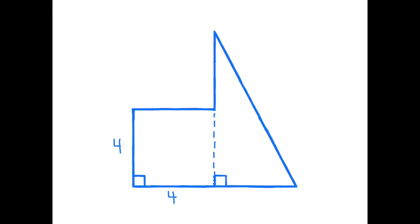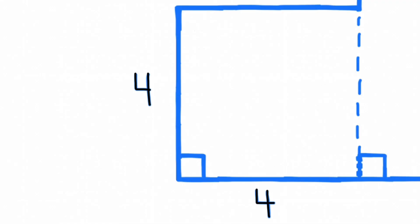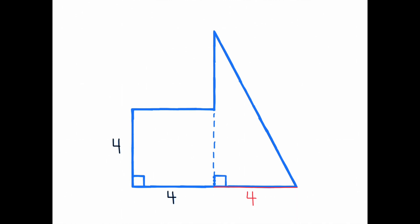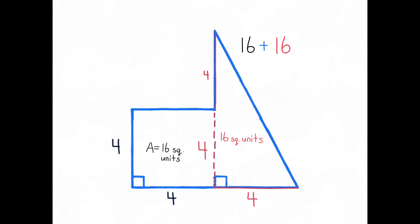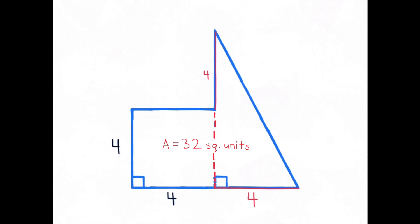I'm going to decompose this pentagon into a square and a triangle and figure out their areas. The square has side lengths of 4. The triangle has a base of 4 and a height of 8. The area of the square is 4 times 4 equals 16 square units. For the triangle, I multiply base times height: 4 times 8 is 32, then divide by 2 since it's a triangle — half of 32 is 16. The area of the triangle is 16 square units. Combining both shapes: 16 plus 16 equals 32. The area of the pentagon is 32 square units.